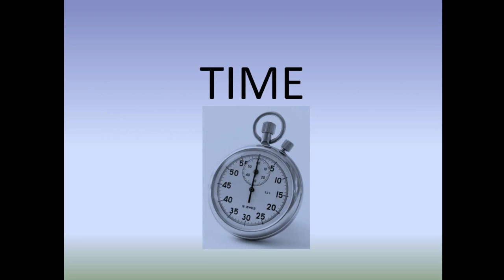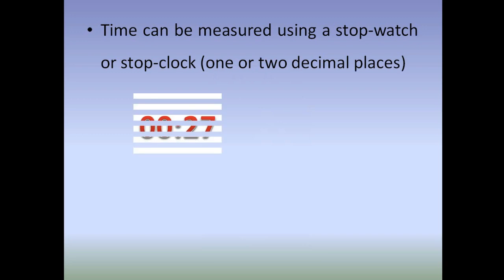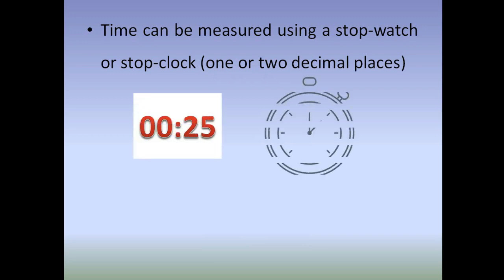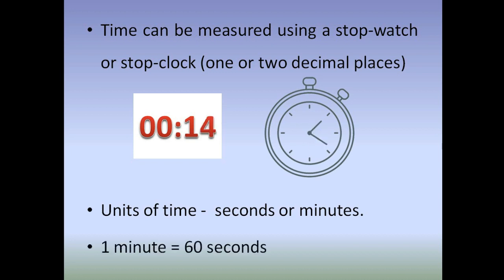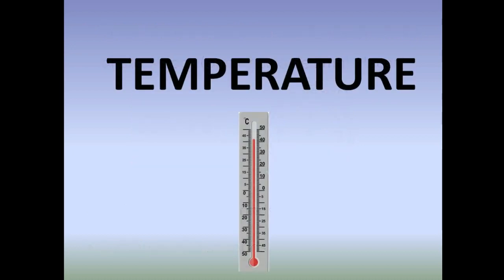First one: time. In chemistry, time is one of the important dependencies for most chemical reactions, so time has to be measured. Time can be measured using a stop clock or digital stopwatch with one or two decimal places for more accuracy. Units of time are seconds or minutes. As we know, one minute is equal to 60 seconds.